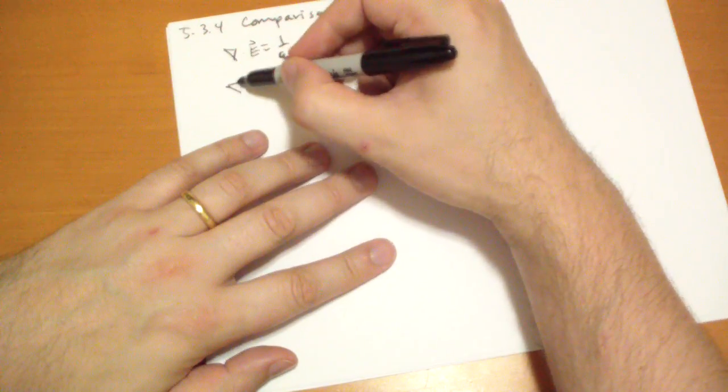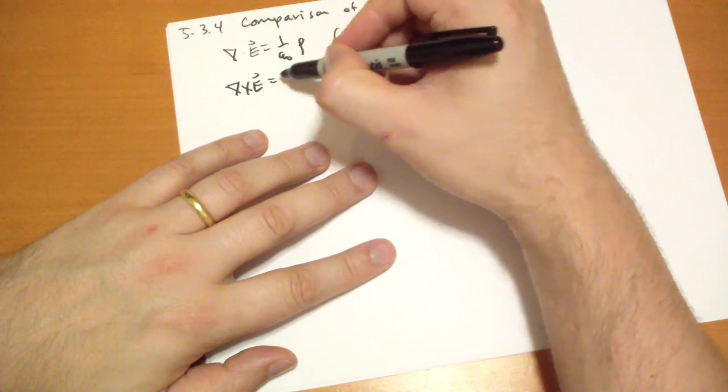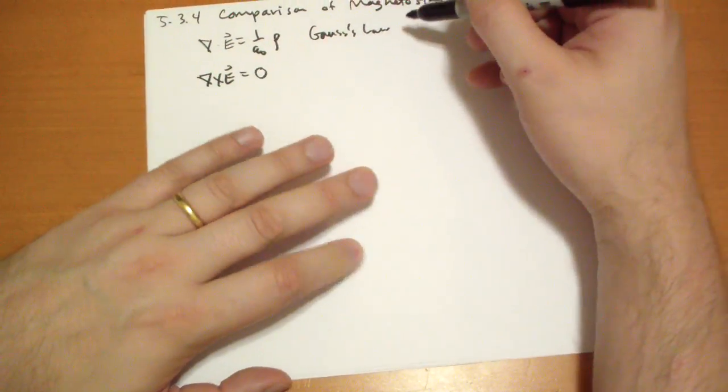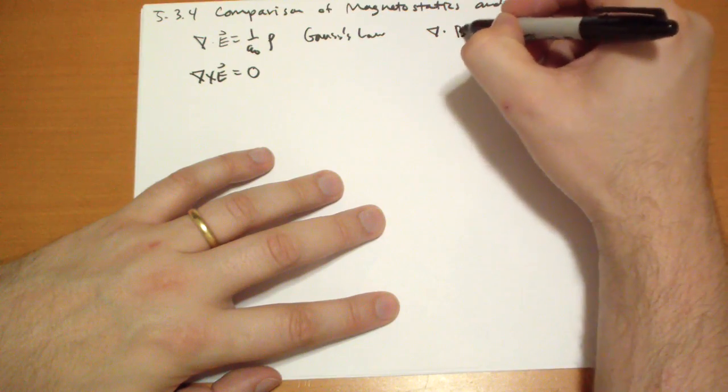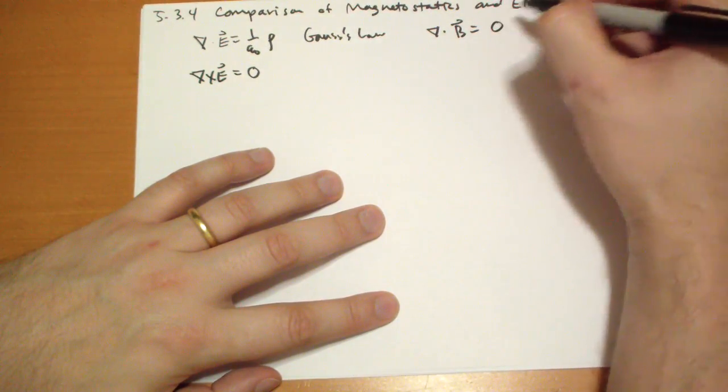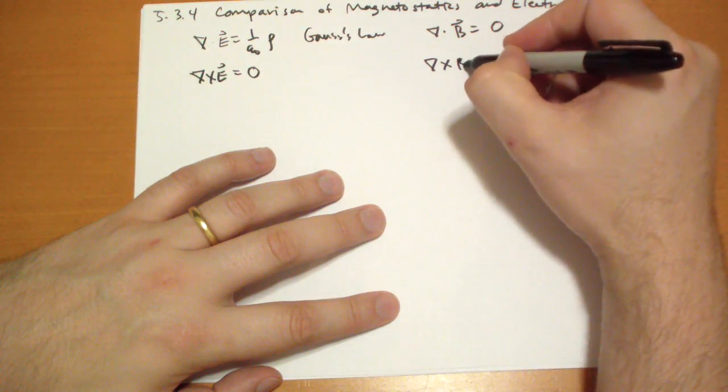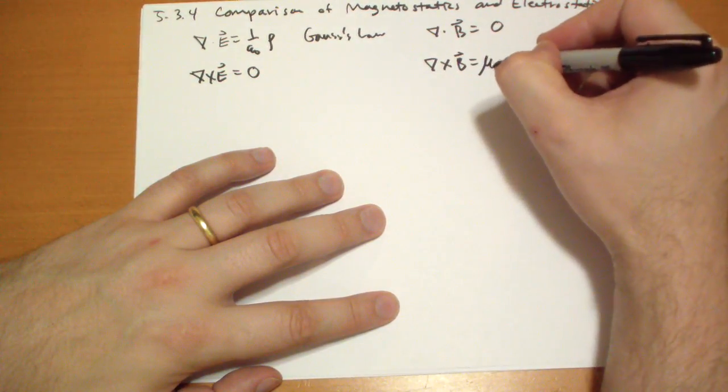And the curl of the electric field is obviously 0. Nobody gets credit for that. Meanwhile, the divergence of the magnetic field is equal to 0. And nobody gets credit for that. But Ampere gets credit for discovering this relation.